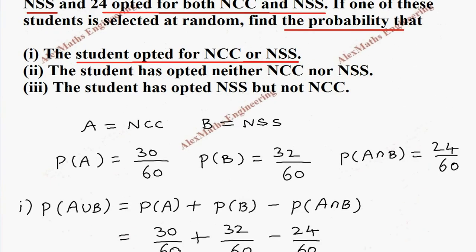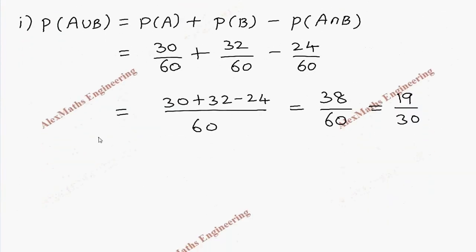Coming to subdivision 2: the student has opted neither NCC nor NSS, so it is A prime intersection B prime. We take P of A prime intersection B prime. Using De Morgan's law, it is A union B whole complement, which is 1 minus P of A union B.